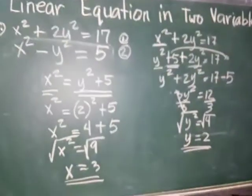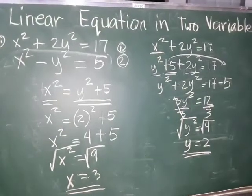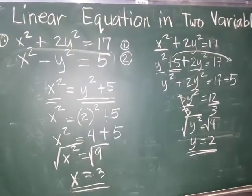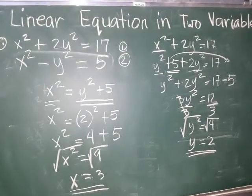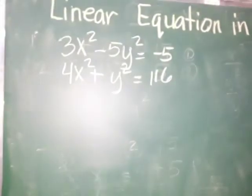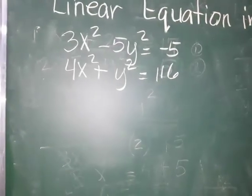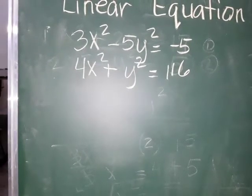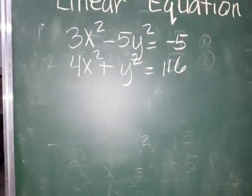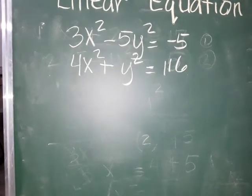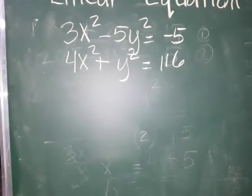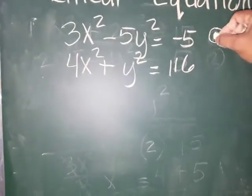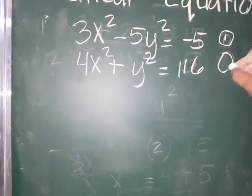I hope this is clear. I'll give you 2 more examples using the elimination method. Example number 2: we have 3x squared minus 5y squared is equal to negative 5, and 4x squared plus y squared is equal to 116. Let the first equation be equation 1, and the second be equation 2.